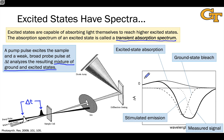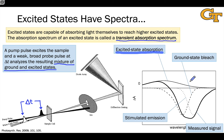Ground state bleach and stimulated emission are really the reasons why we observe an overall negative signal for delta A. This may seem strange because we're exciting the sample — this should generate a new absorption spectrum such that when we subtract out the background, we expect positive delta A. But the ground state bleach and stimulated emission effects have a negative effect that is often dominant. What we're truly interested in is the excited state absorption spectrum. To find that, we take the measured signal and subtract out all the dotted lines to isolate the lightly colored solid line, which is the absorption spectrum of the transient species of interest.